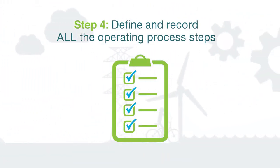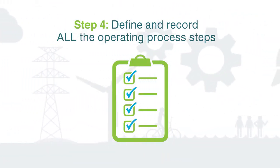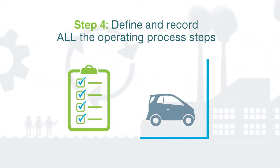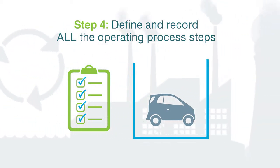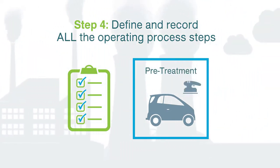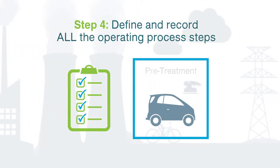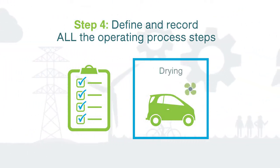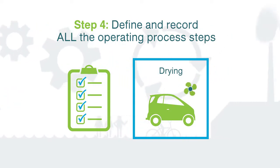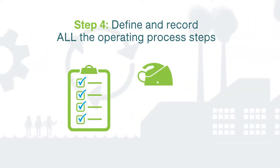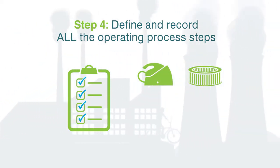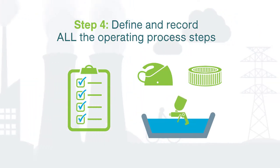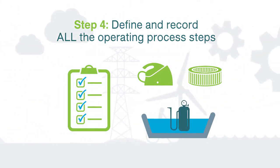Step 4: define and record all the operating process steps within the selected balance space boundary. These include the pre-treatment, priming, painting and drying processes using the following equipment: the steam generator, exhaust air filter, and the washing and cleaning of the spray gun and equipment.